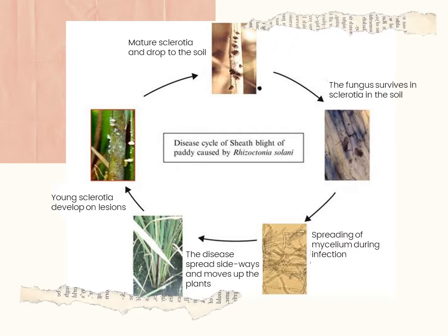The fungus also produces extracellular enzymes that degrade plant cells to facilitate colonization. Once the fungus penetrates and colonizes the plant tissues, symptom development is initiated. The fungus grows upward on the plant, penetrating and infecting upper leaf sheaths, leaf blades, and panicles.